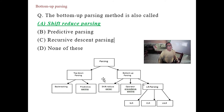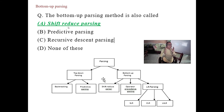Bottom-up parsing is called shift-reduce parsing. Predictive parsing is top-down parsing and recursive parsing is also top-down. Bottom-up parsing is basically shift-reduce parsing — either shift or reduce. This is shift-reduce parsing.